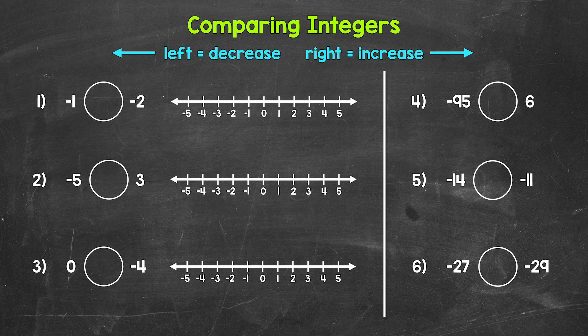Let's jump into number one, where we have negative one is greater than, less than, or equal to negative two. Let's take a look at the number line. Negative one is right here and negative two is right here. So looking at that number line, which integer is further to the right? That means it's going to be greater in value. Negative one is further right, so negative one is greater than negative two.